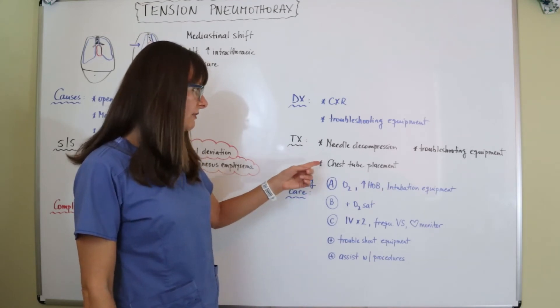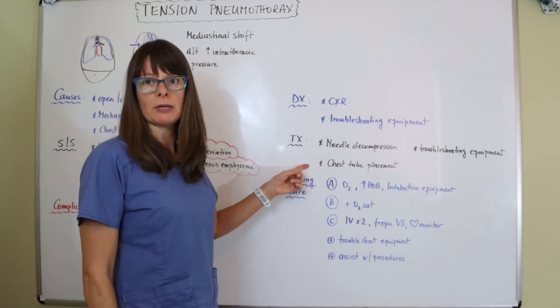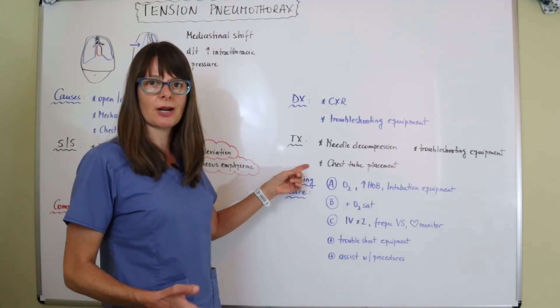And then a more definitive treatment is a chest tube placement if this is a new tension pneumothorax, and that's probably most likely going to be because of some traumatic injury.